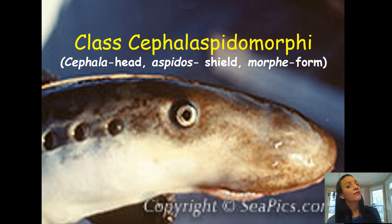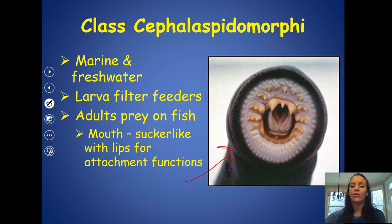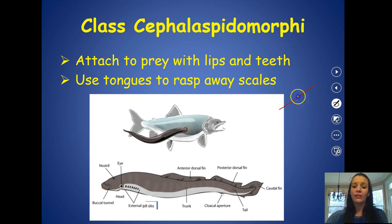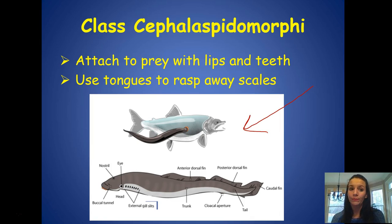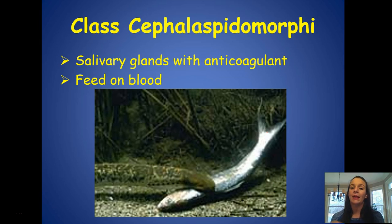Class Cephalospidomorphi means 'head shield form.' These fish were marine and freshwater; larvae were filter feeders while adults prey on fish. They have a sucker-like mouth with lips for attachment — adults use lips and teeth, and the tongue rasps away scales. They are parasitic fish that attach to hosts. They also have salivary glands with an anticoagulant and feed on blood, very similar to leeches.